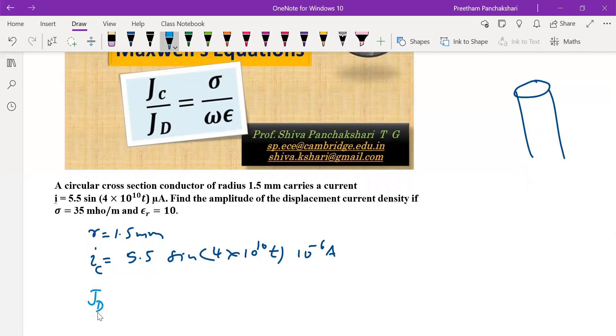Complete equation is not needed here. If σ is equal to 35 mhos per meter and εr is given as 10.